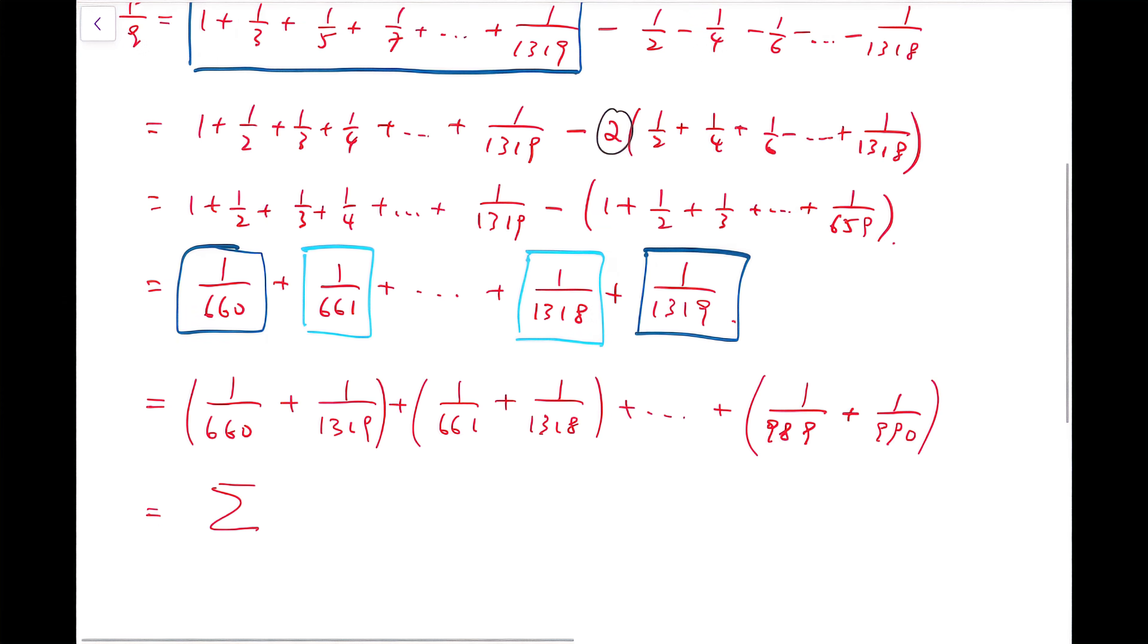And so, I can now rewrite it as a summation. All the way to 989, of the form 1 over k, plus 1 over, and in fact, the second fraction within the pair is actually 1979 minus k.